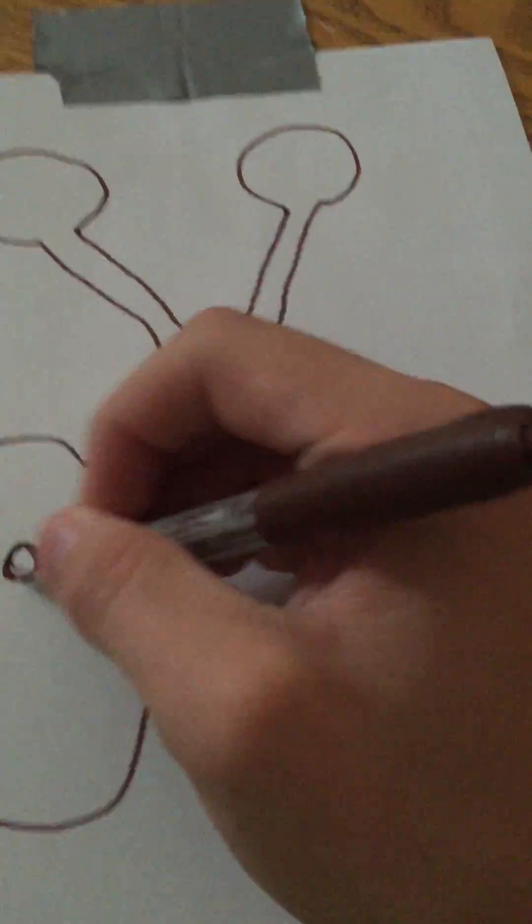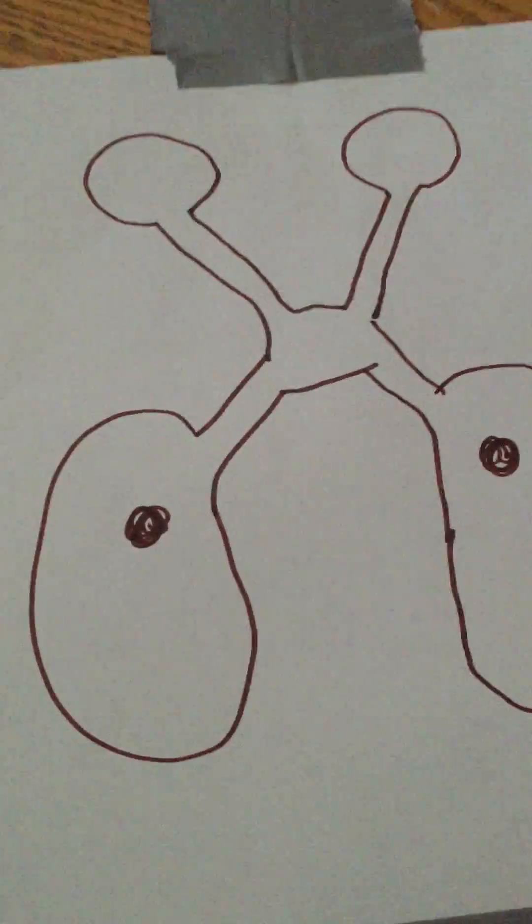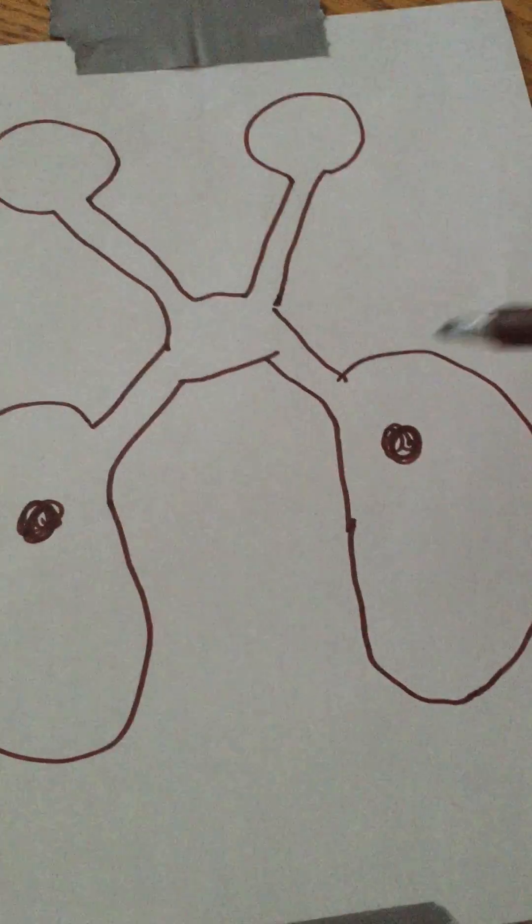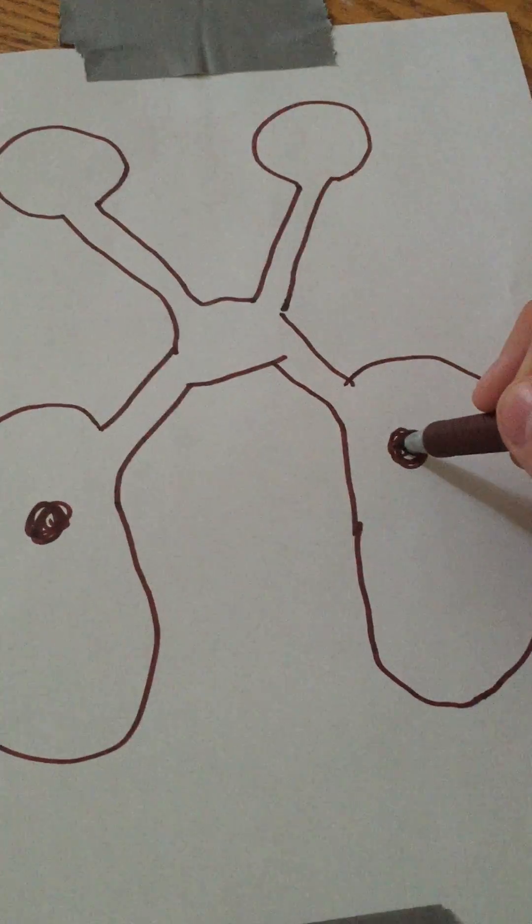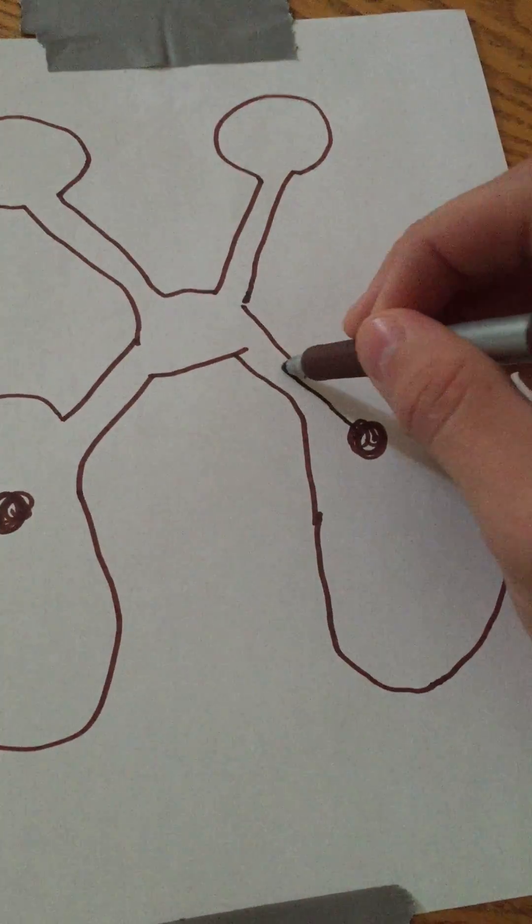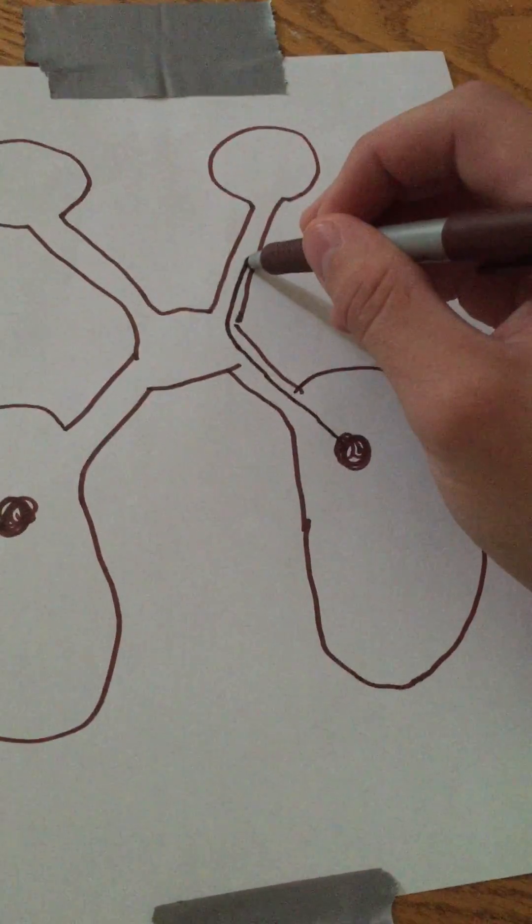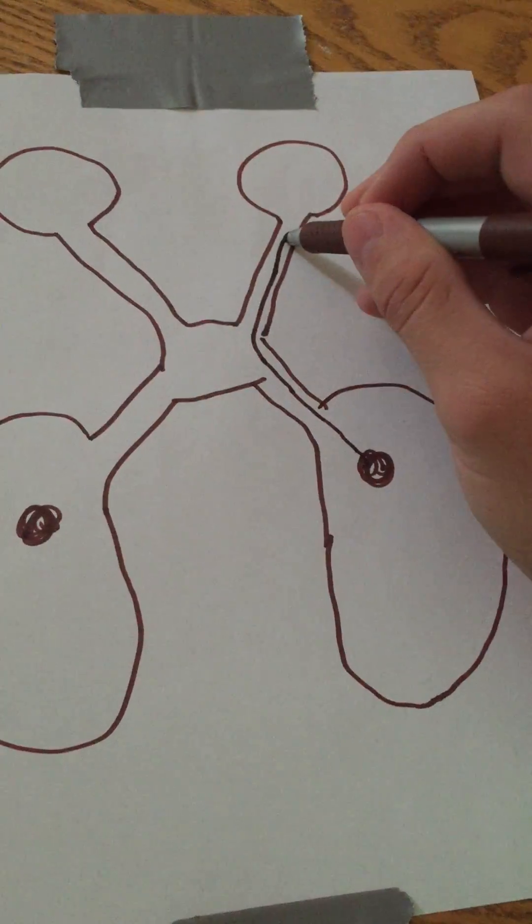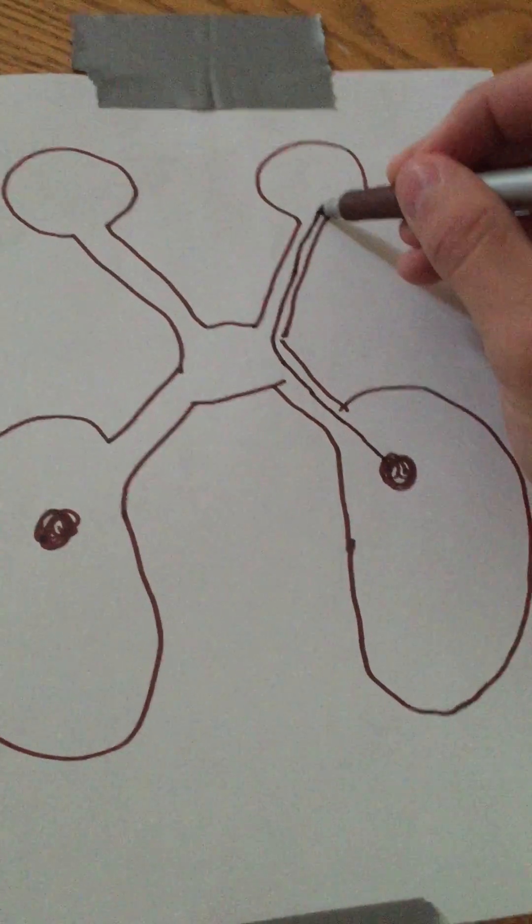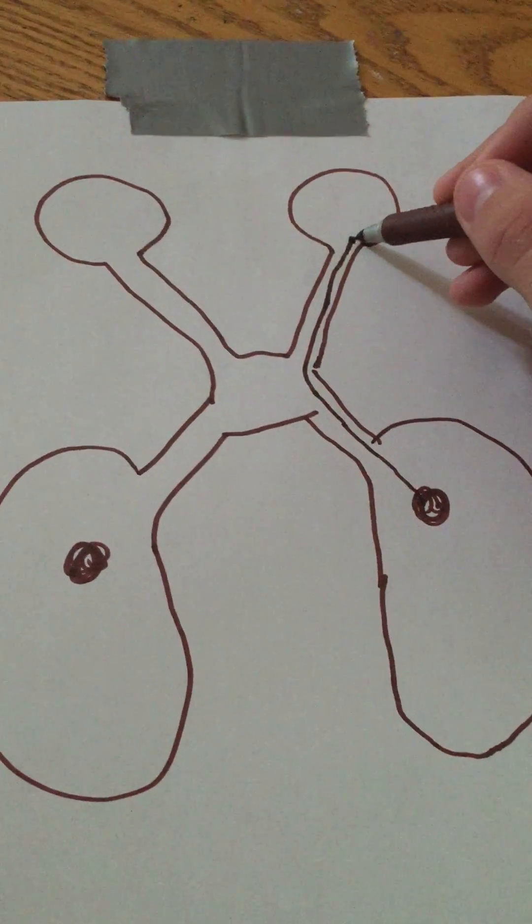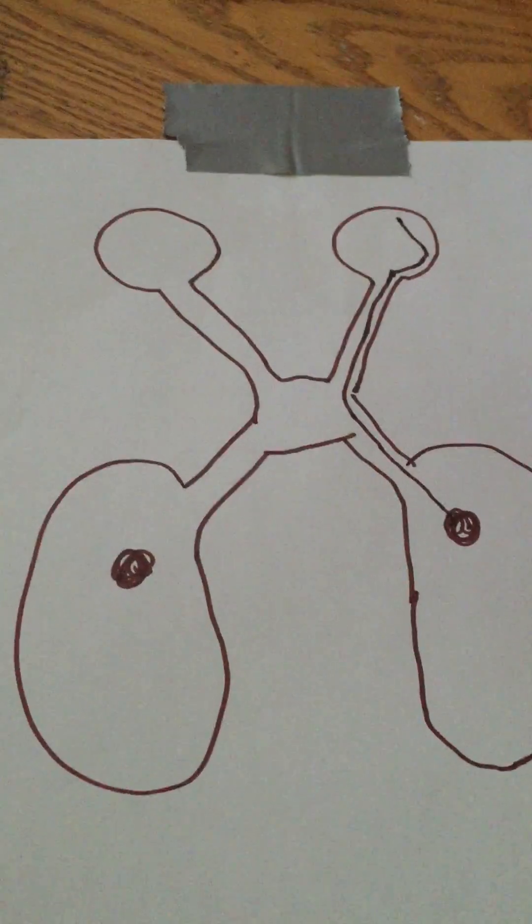The lateral geniculate nucleus, I'm pretty sure that's how you say it, and then that'll bring the right optic nerve into the right optic tract, and that will give you the right temporal field of vision.